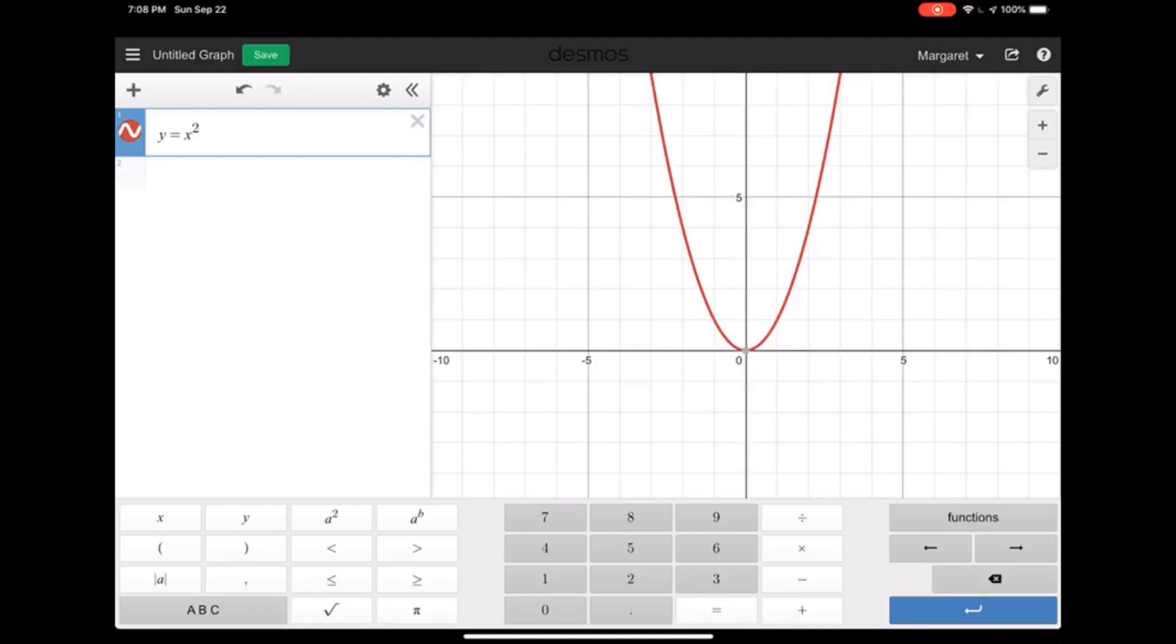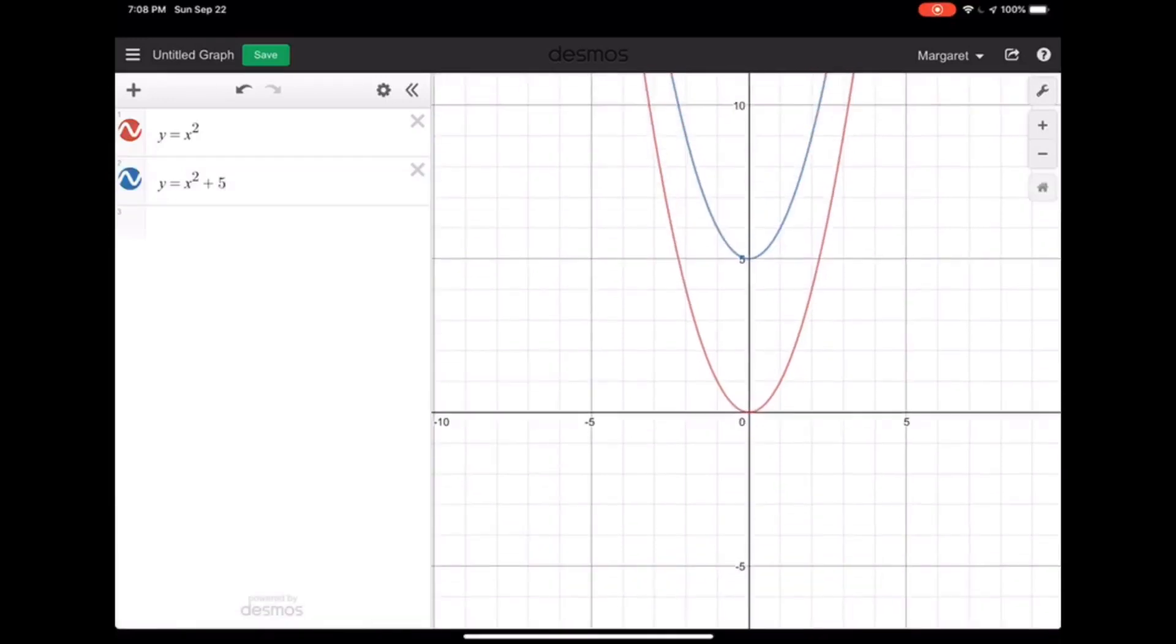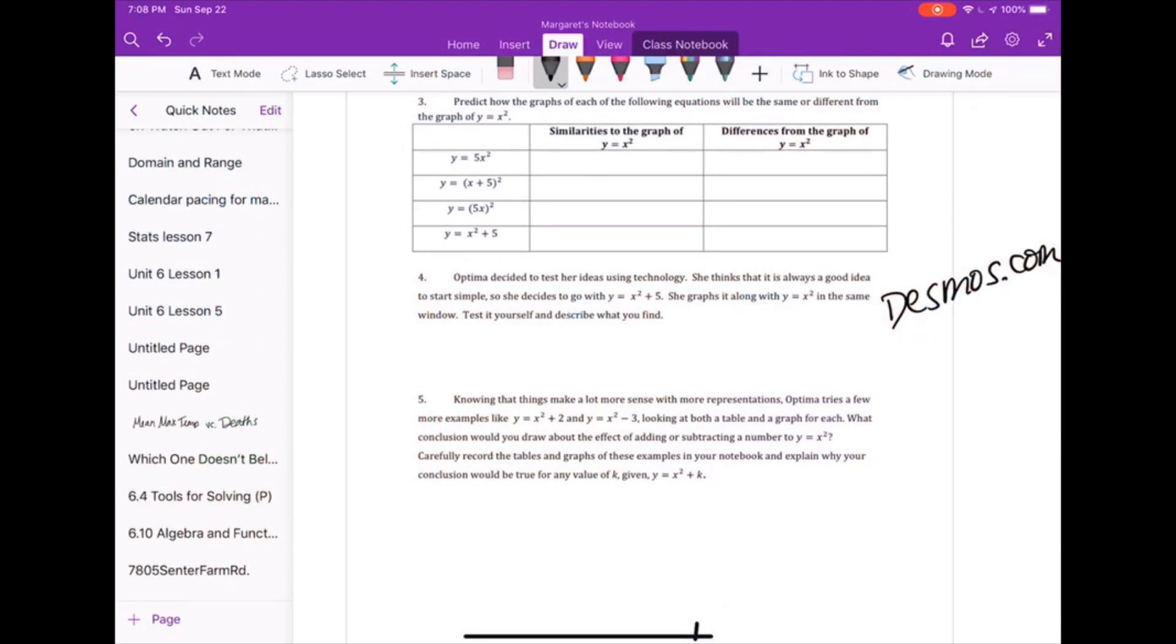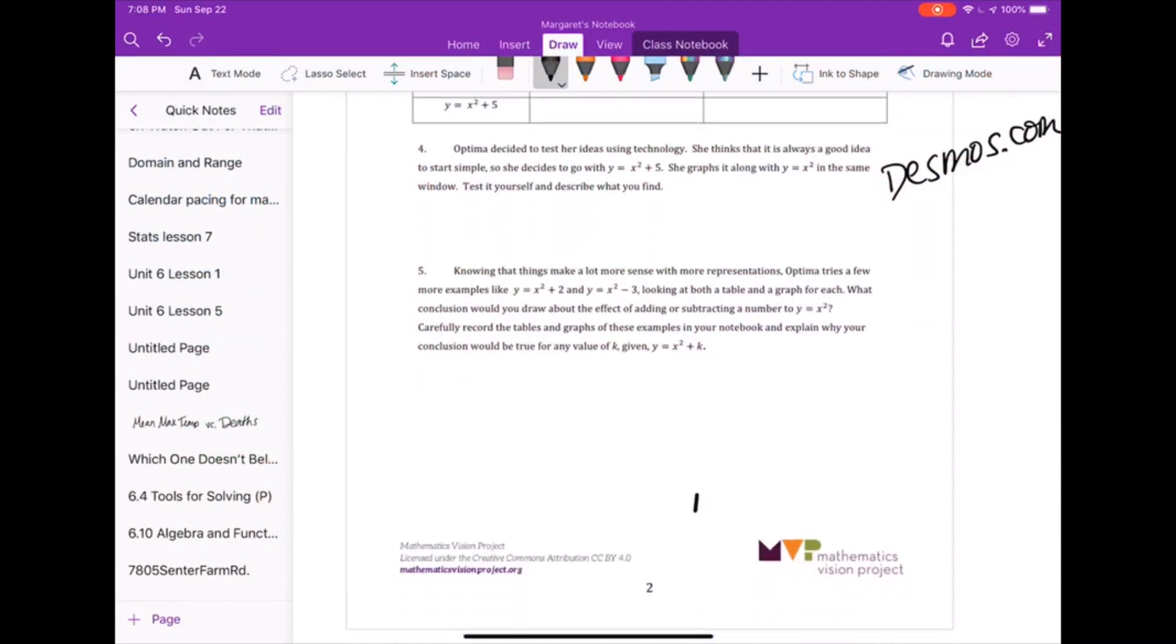So Desmos is going to be where we're going to test our predictions. So we're going to write our initial area, y equals x squared. We get this nice parabola, which hopefully you talked about in your unit 3. And then we're going to write in our comparison, which Optima Prime says is x squared plus 5 is the first one she wants to work with. As we can see, the curve remains the same, but shifts up 5 on the y-axis. So now you are prepared to go answer that question and describe what you found.